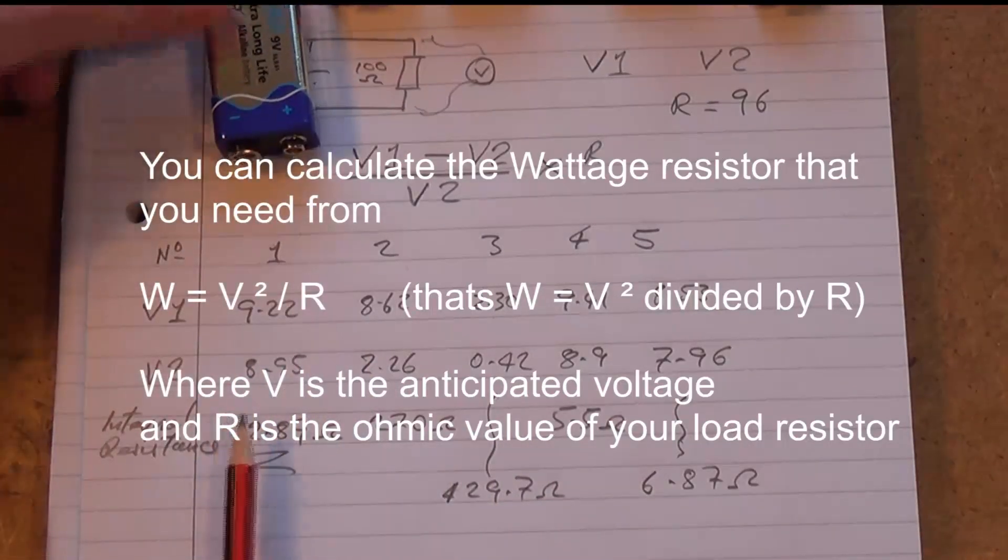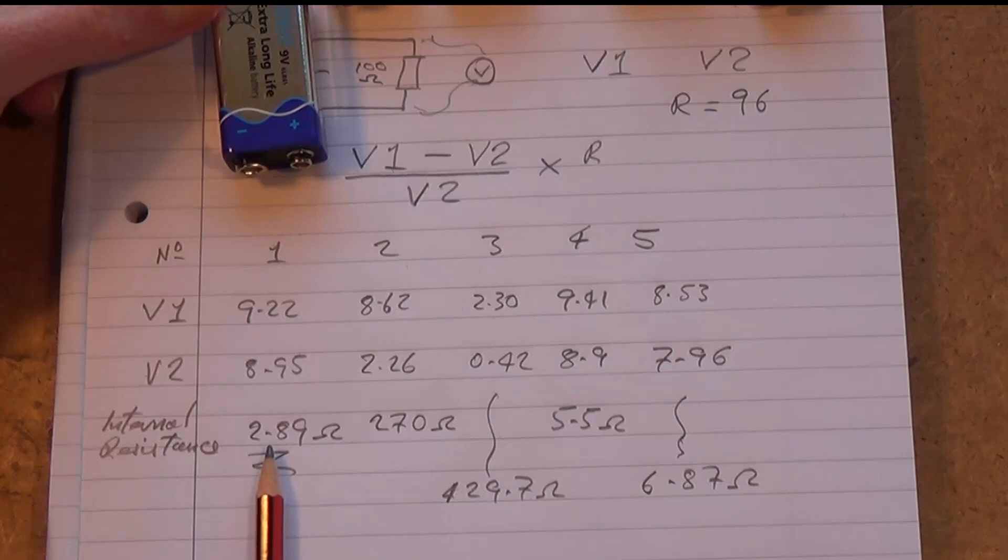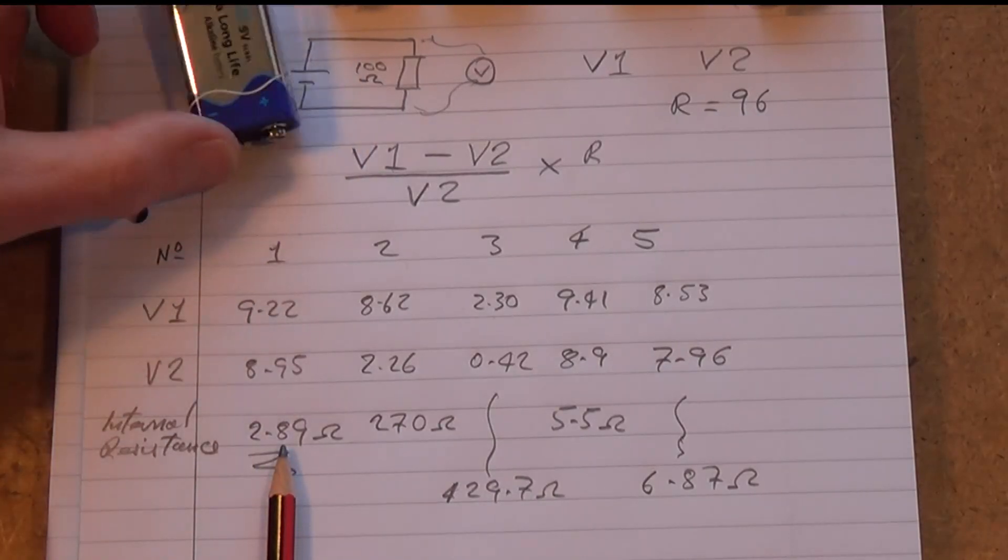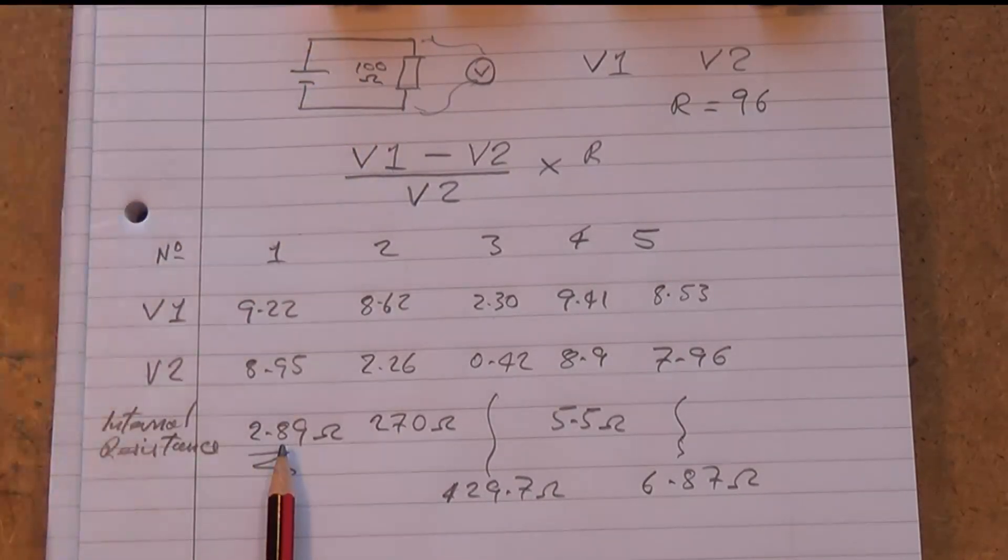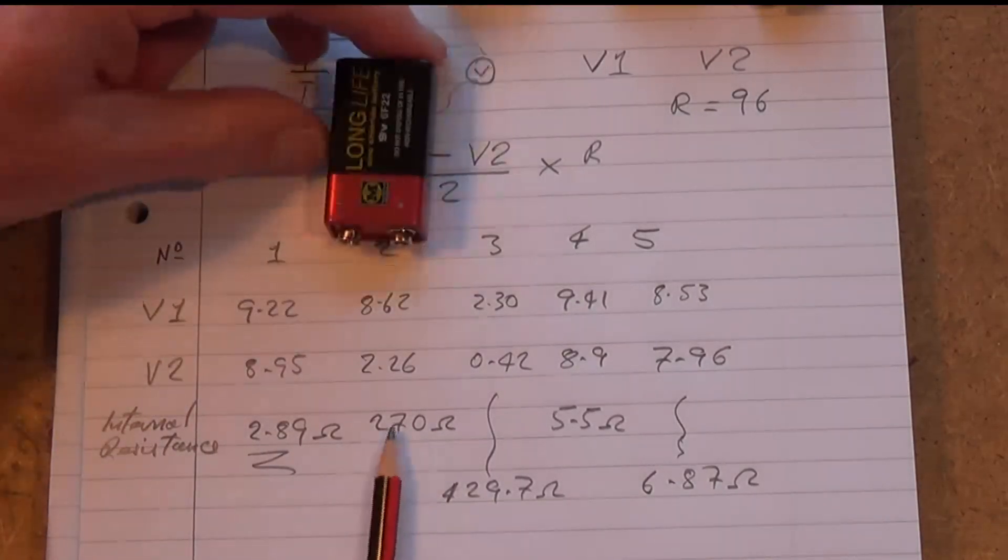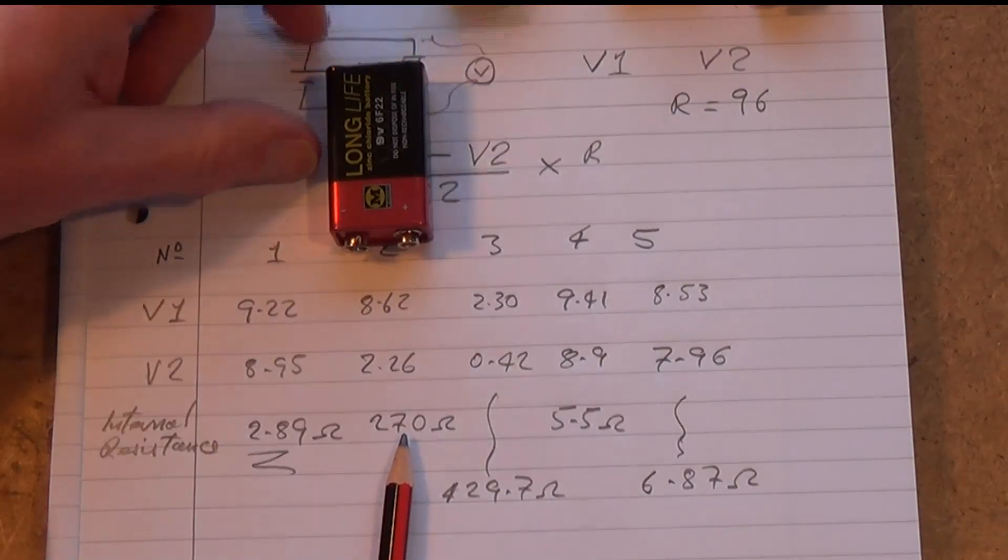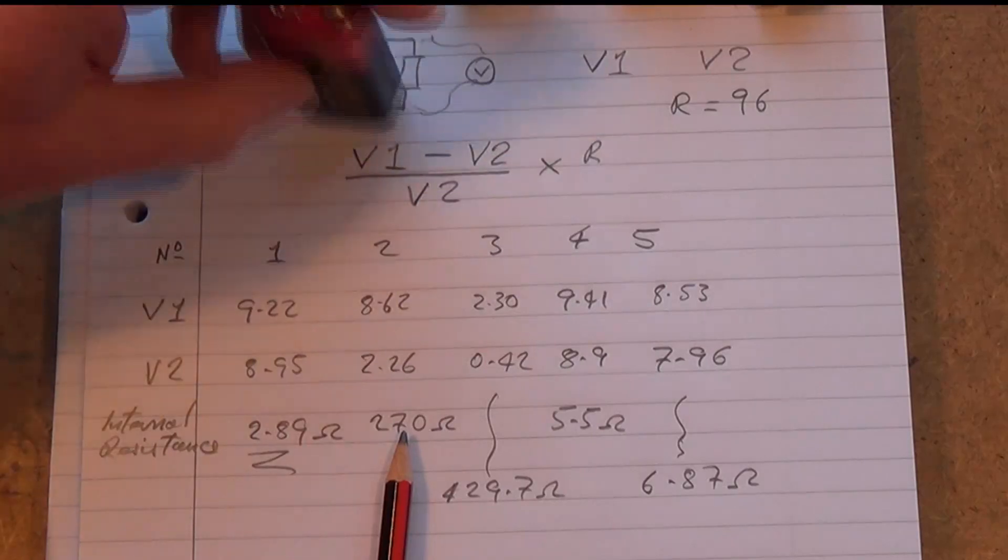For battery number one, that's got an internal resistance of 2.89, so call it 2.3, so that's a good battery. We'll keep him. Battery number two has got an internal resistance of 270 ohms. So that one can go.